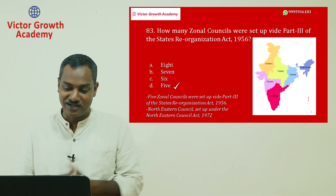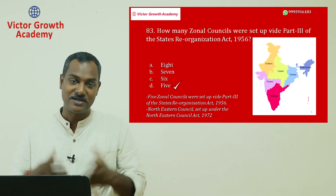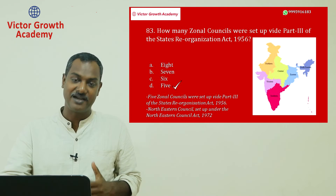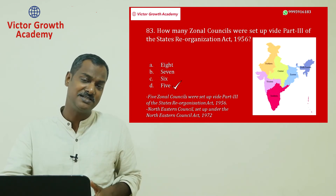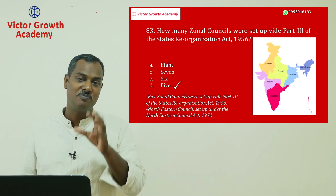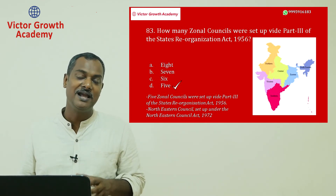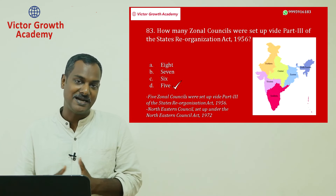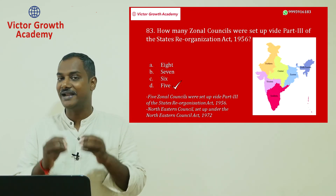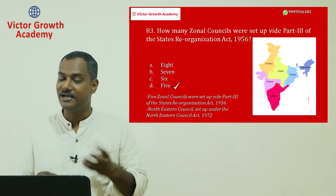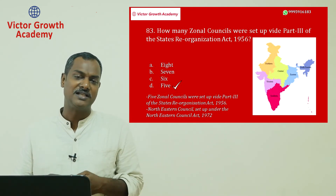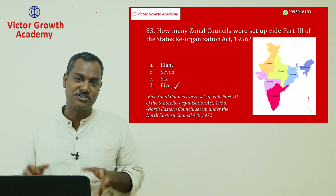The UPSC is all about reading carefully. The question specifically asks how many zonal councils were created by the States Reorganisation Act of 1956 — the answer is five, not six. Many students may have gone wrong on this. You must be very clear about what you are reading and how you answer — nothing is a simple question, there are always tricks.